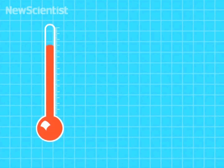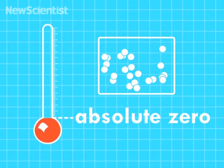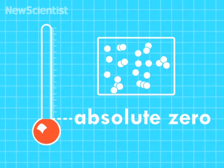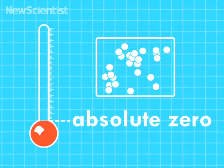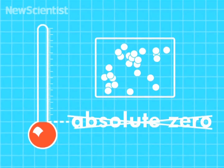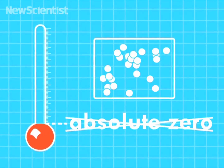At a temperature of absolute zero, particles have no energy and are completely still. But absolute zero isn't actually the lowest possible temperature.